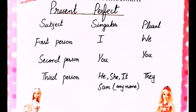Sabse pahle hum subject ko dekhte hain. Subject yahaan par hum three types ke use karte hain: first person, second person, and third person. Inko two categories mein divide kiya gaya hai: singular and plural. First person singular: I, plural: we.